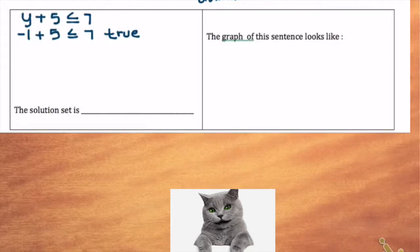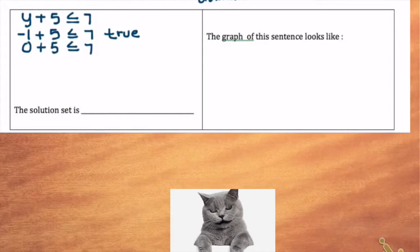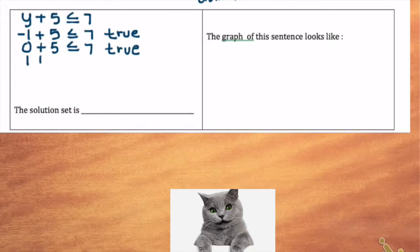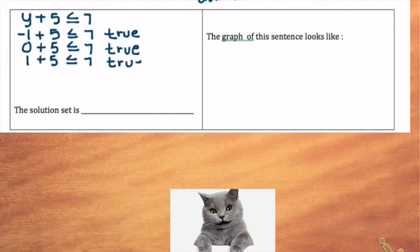Next we have 0: 0 plus 5 is less than or equal to 7. And 0 plus 5 is 5, and 5 is less than or equal to 7 — so that's true. Our next choice is 1: 1 plus 5 is less than or equal to 7. 6 is less than or equal to 7 — so again, true.